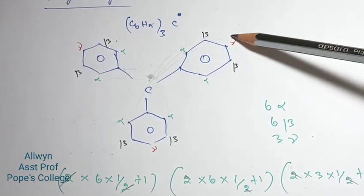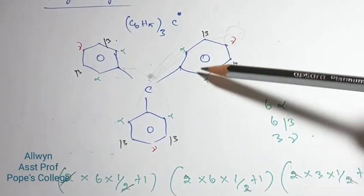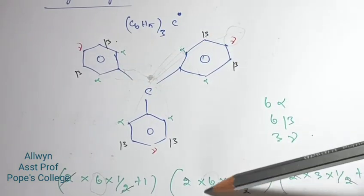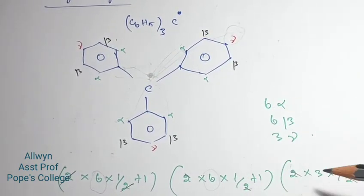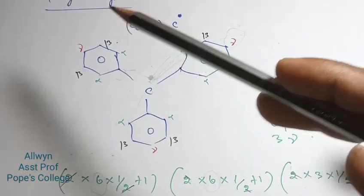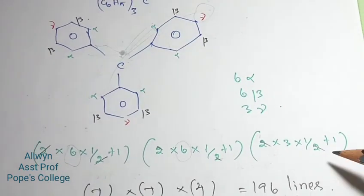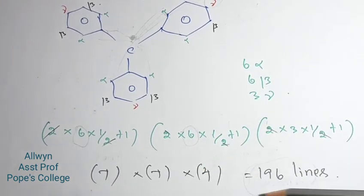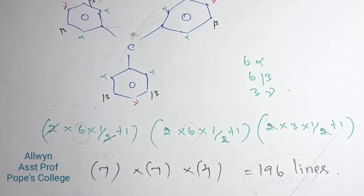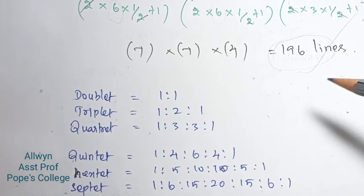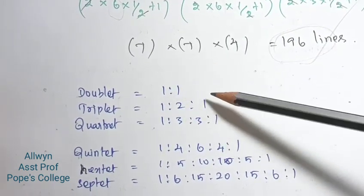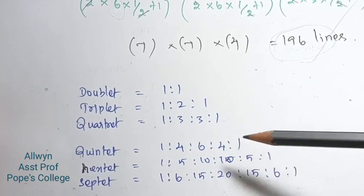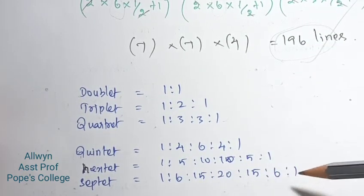The gamma protons are different. So 6 equivalent protons give 2I+1 = 7 lines; another set of 6 gives 7 lines; and a set of 3 gives 4 lines. The hyperfine splitting gives 7 × 7 × 4 = 196 lines. The intensity ratios follow: doublet 1:1, triplet 1:2:1, quartet 1:3:3:1, quintet 1:4:6:4:1, and so on.